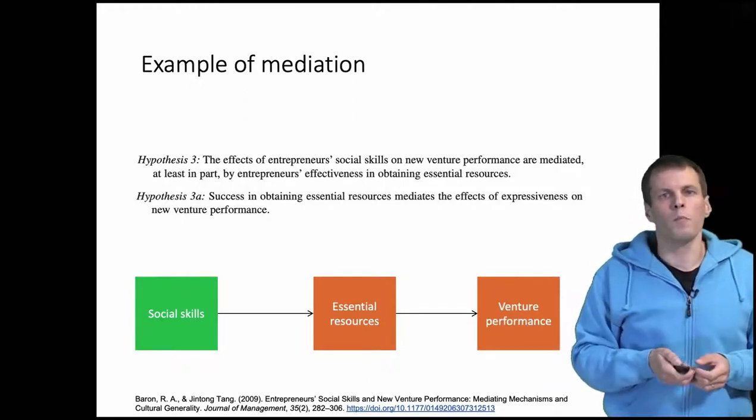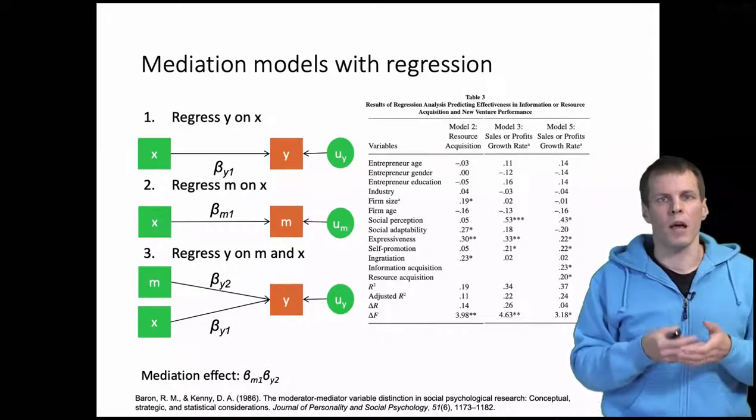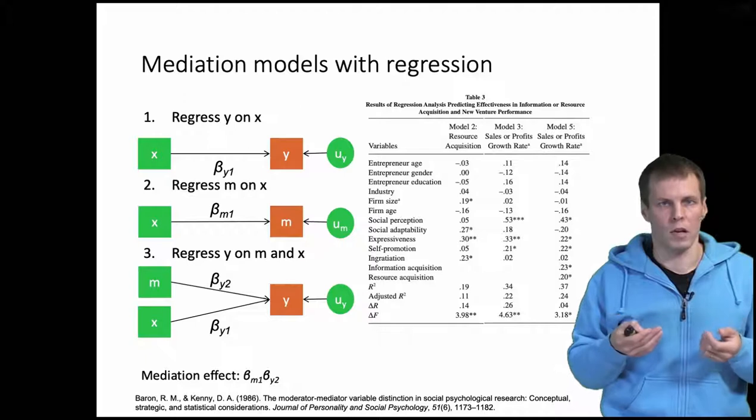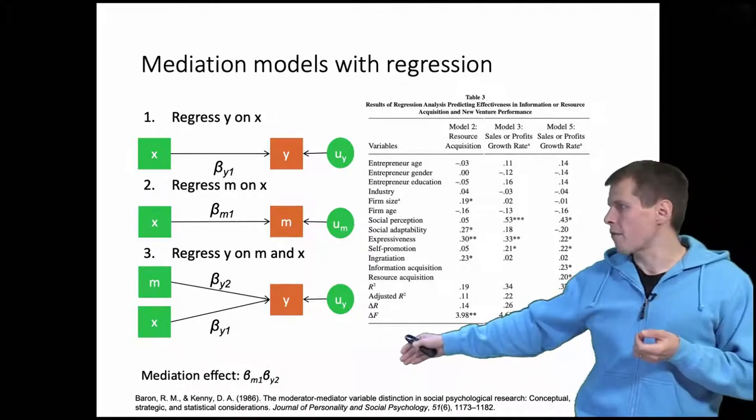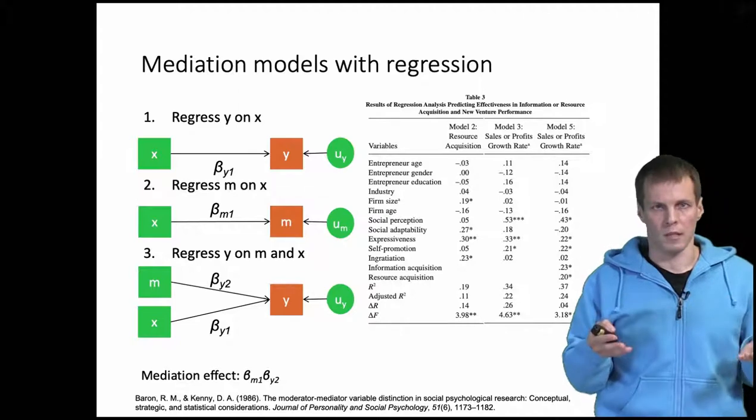How is this kind of model tested with regression analysis? We have this very simple approach consisting of three regression analyses introduced by Baron and Kenny, and this is known as the Baron and Kenny method or causal steps method.